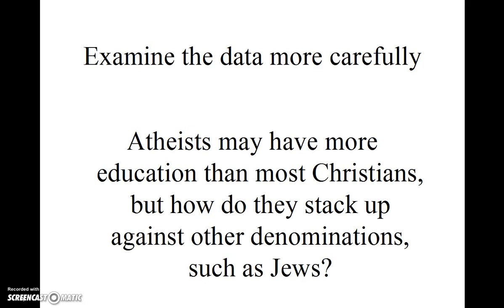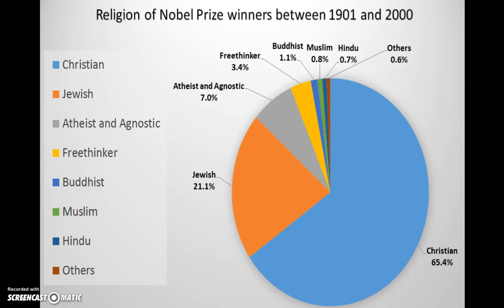Let's examine the data more carefully. Atheists may have more education on average than most Christians, but how do atheists stack up against other denominations, such as Jews? Jews tend to have more education and more accomplishment as scientists. It's not the atheists who are over-represented among the world's Nobel Prize winners — it's the Jews.